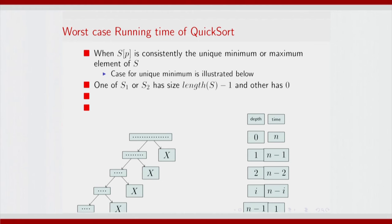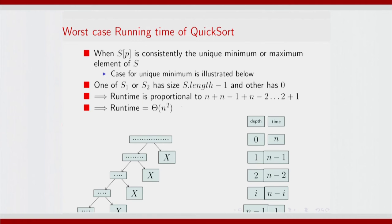This is basically going to incur cost which is the sum from depth 0 to n minus 1 of (n minus d). This is very similar to the worst case of insertion sort. The run time is proportional to that sum, and you can show that this is actually Θ(n²).